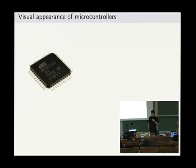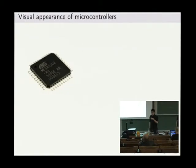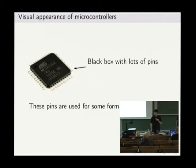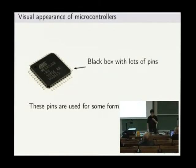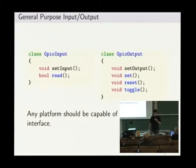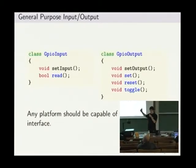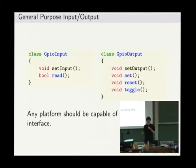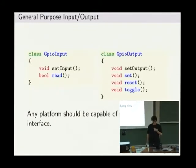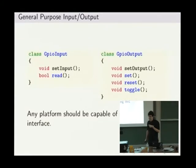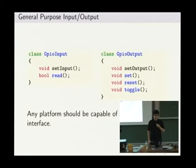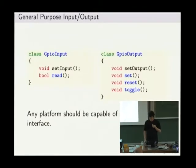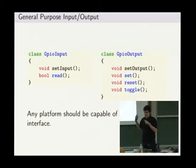Let's talk about how a microcontroller looks like. It's a black box with lots and lots of pins, and for some reason those pins must be there — used for some form of intelligent input/output. In general, every microcontroller has at least this functionality: you have some form of input, you can read it, it returns a one or a zero depending on configuration — whether it's high level or low level. And you can do the same by setting an output. This is the first example of an interface which you can use on every microcontroller.